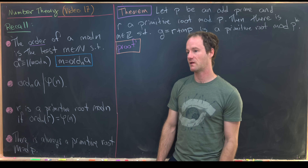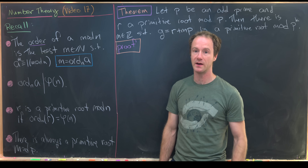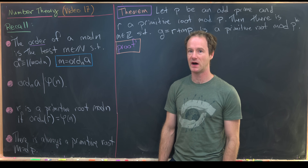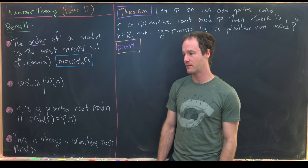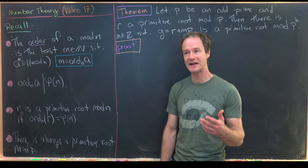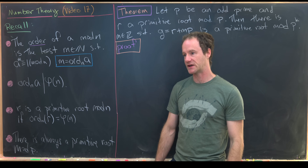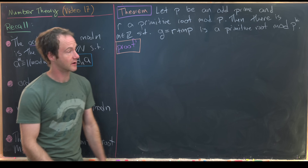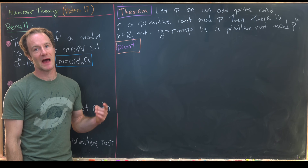Furthermore, the last thing we proved in the last video is that there is a primitive root mod p for every prime. We also gave some examples of composites where there were not primitive roots, and looked at some other composites where there were primitive roots. Today, we really want to classify all natural numbers that allow us to have primitive roots, starting with this first theorem: there is always a primitive root mod a power of a prime.